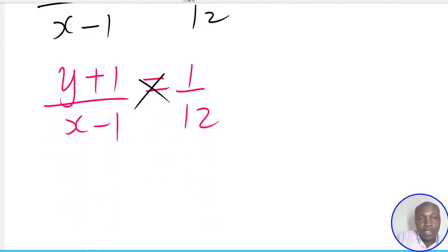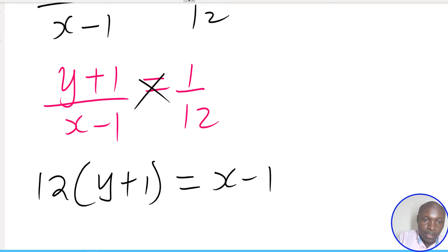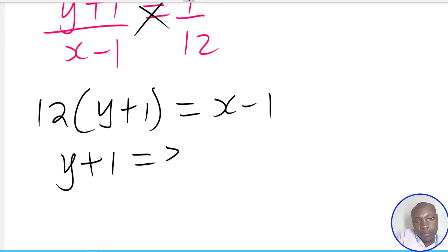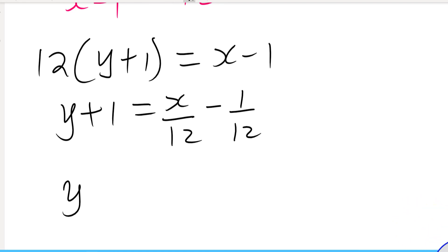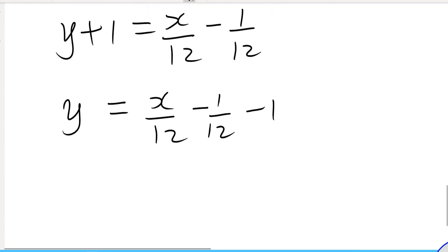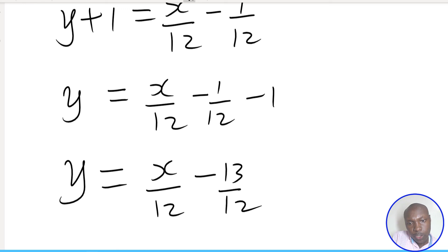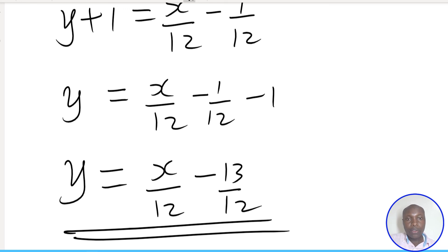Cross-multiplying gives 12(y + 1) = 1(x - 1). Dividing everything by 12, since the equation must be in the form y = mx + c, we get y + 1 = x/12 - 1/12. Taking 1 to the other side: y = x/12 - 1/12 - 1, which gives y = x/12 - 13/12. That is the equation of the normal in the form y = mx + c.